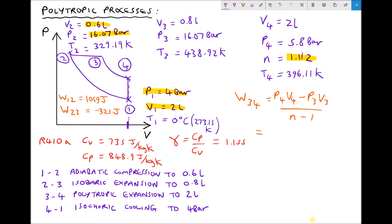As before working in SI units, we have P4 which is 5.8 bar, 5.8 times 10 to the 5 converting to pascals, times V4 which is 2 liters or 0.002 meters cubed. From that we're subtracting P3, 16.07 bar or 16.07 times 10 to the 5, times V3, 0.8 liters or 0.0008 meters cubed. Once again we'll use our square bracket.